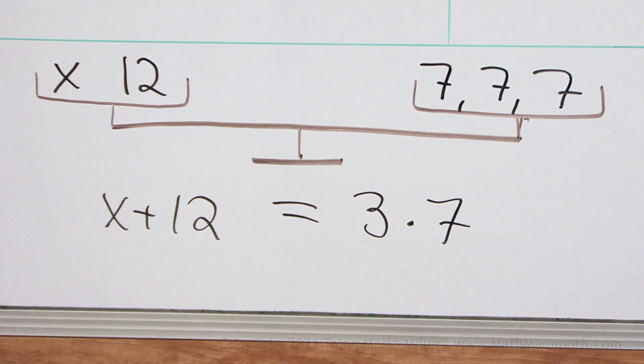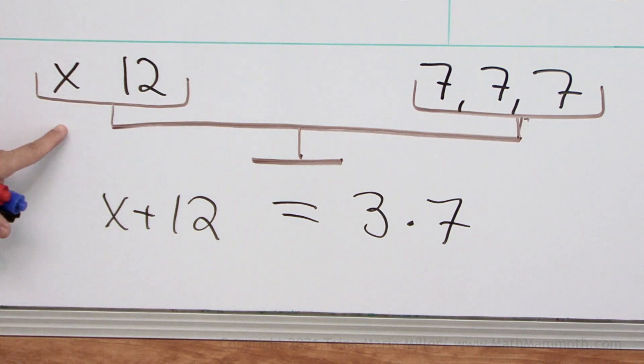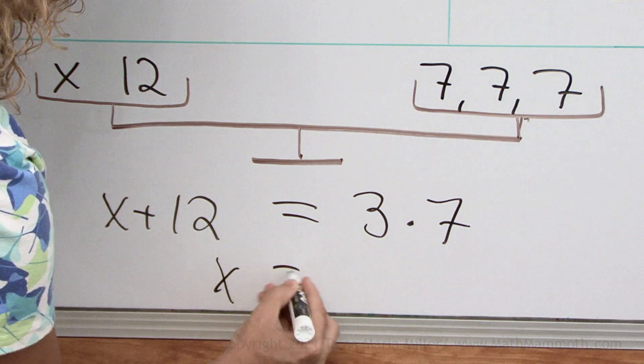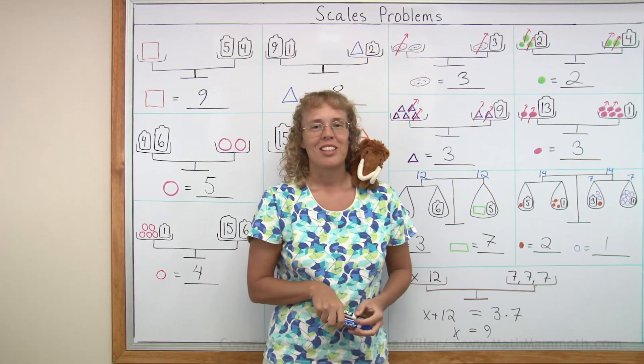Seven, seven, seven on that side makes 21. So this side also must be 21. So what is x? x equals nine. Yes. You see? You're solving equations now. All right, we're all done with this lesson.